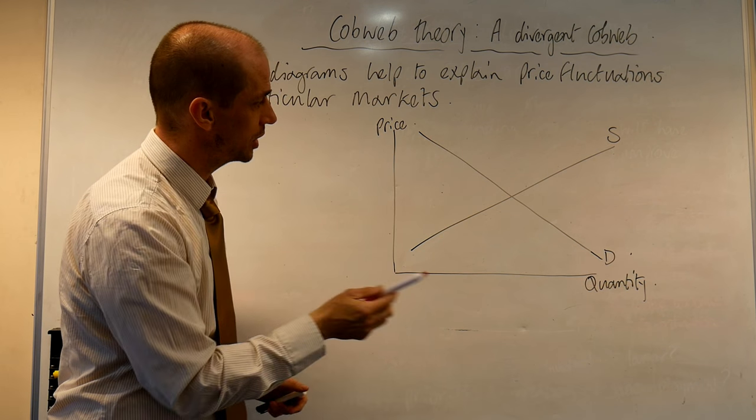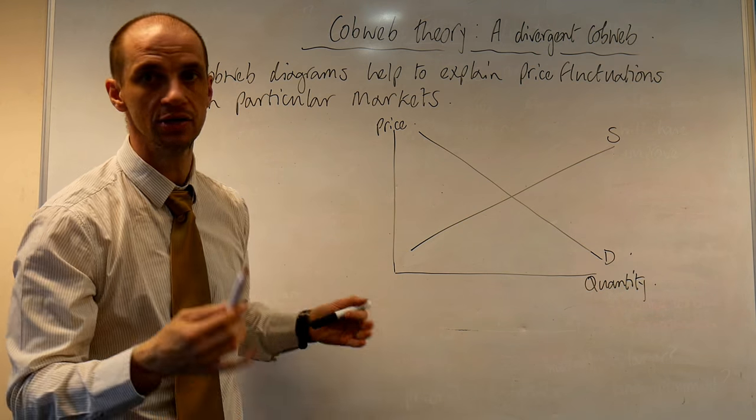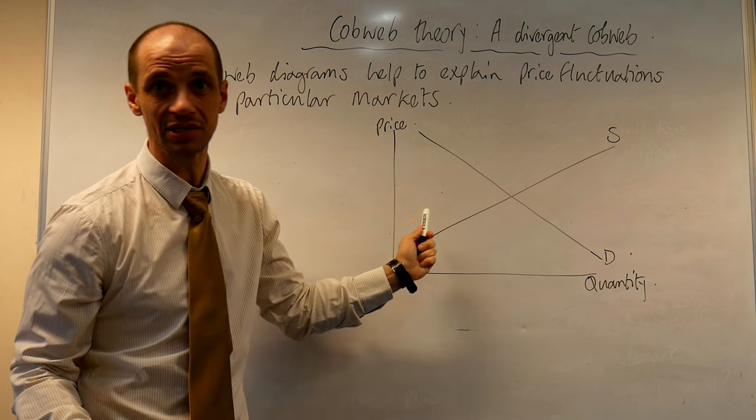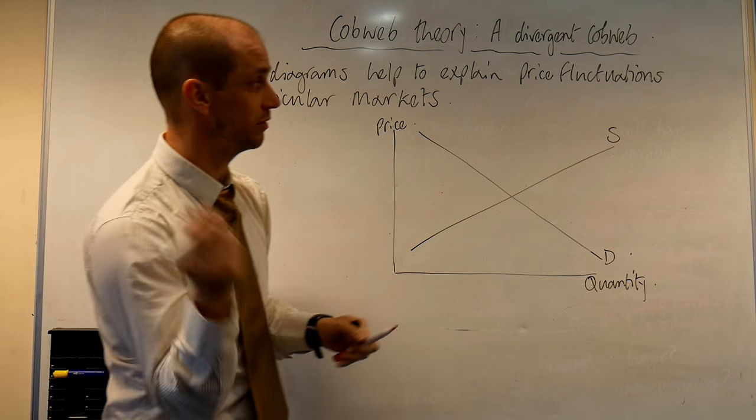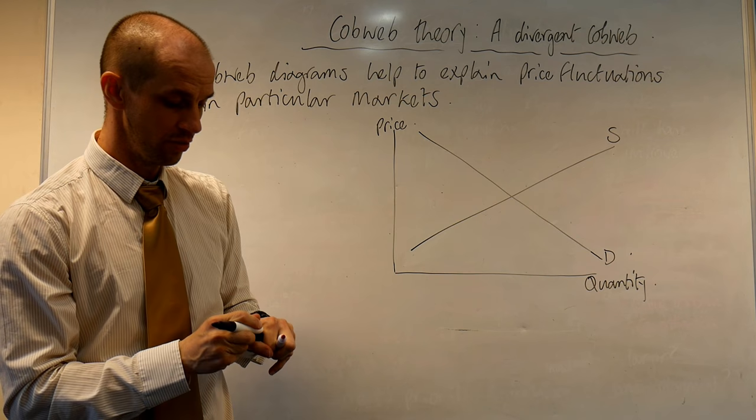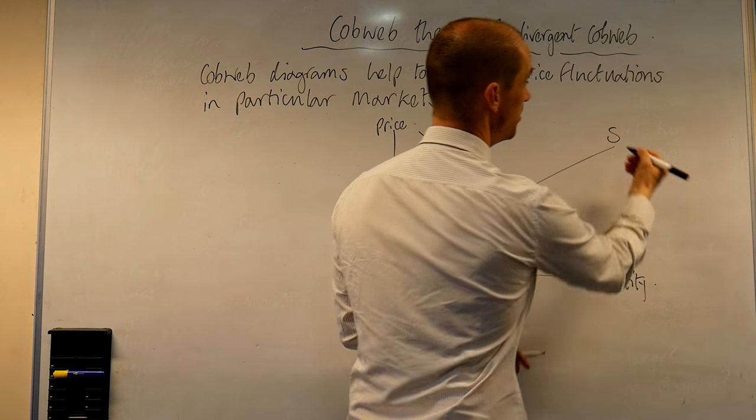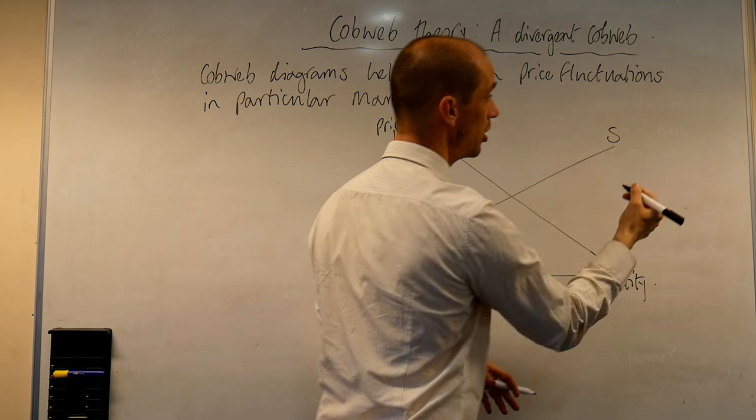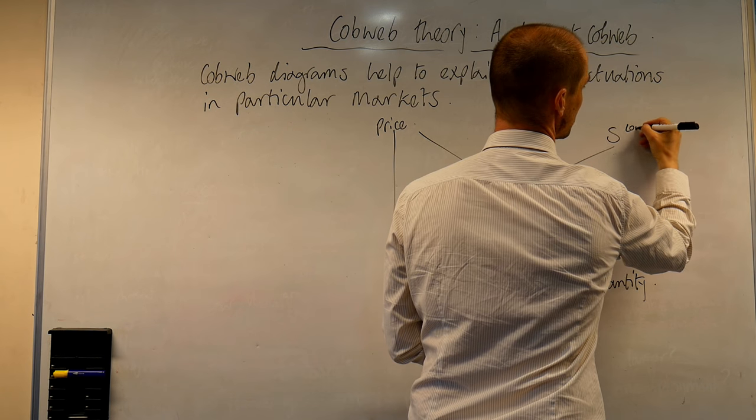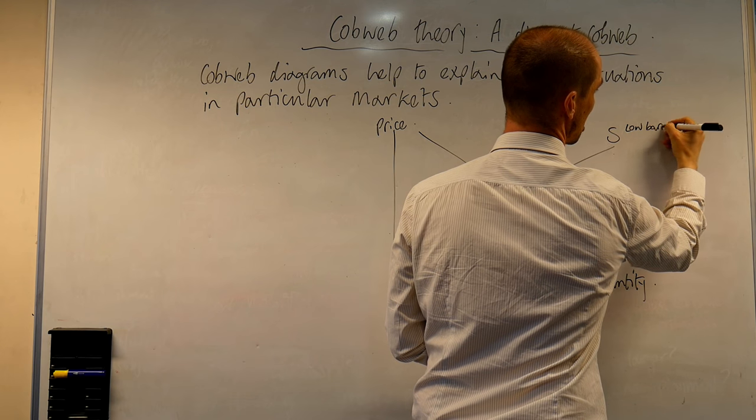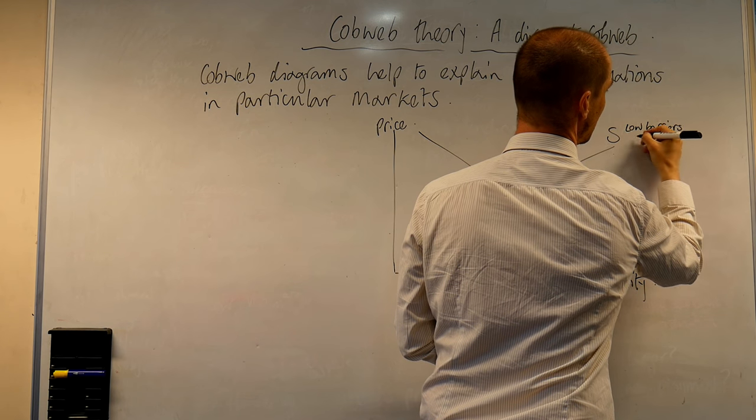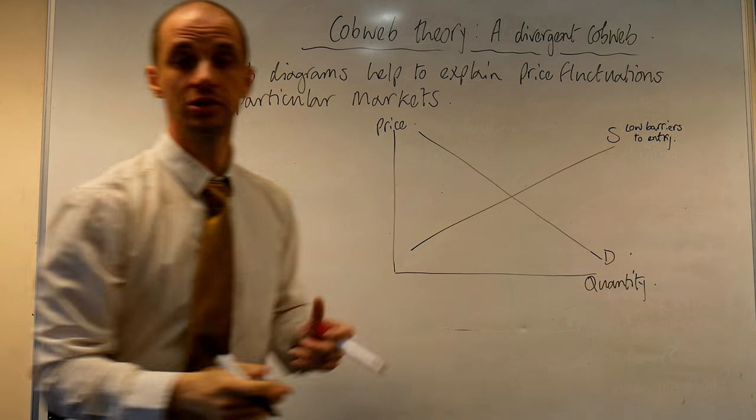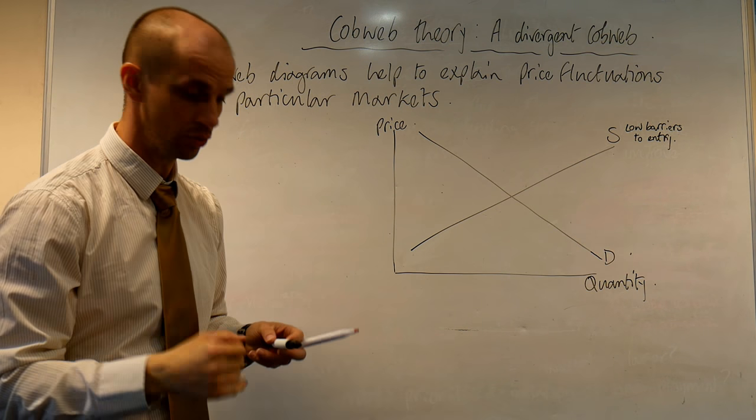We've got our standard supply and demand diagram there as you'd expect. Notice that I've drawn a relatively elastic supply curve. There's a reason for doing so. The fact is that many different farmers could actually switch to production of this given good, so there's low barriers to entry. Because there's low barriers to entry, other producers can easily enter that marketplace and actually start producing that good.